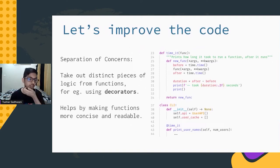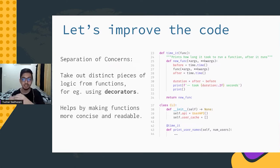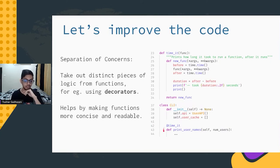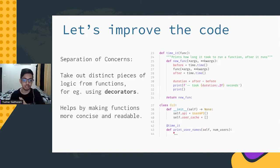What can be made better with the code? The first thing is separation of concerns — distinct logic pieces should be separated using things like functions or decorators. A good example is the timing logic inside the print_usernames function. That can be taken out into a decorator called `time_it`, which is slapped on top of the function. All it does is track the time before, track the time after, calculate the duration, and print it out — so the print function doesn't have to concern itself with the timing logic.